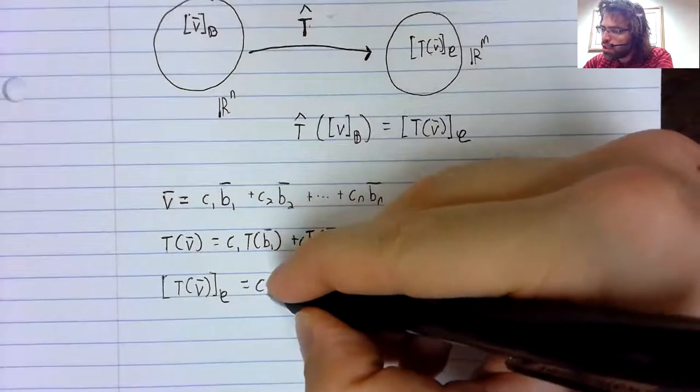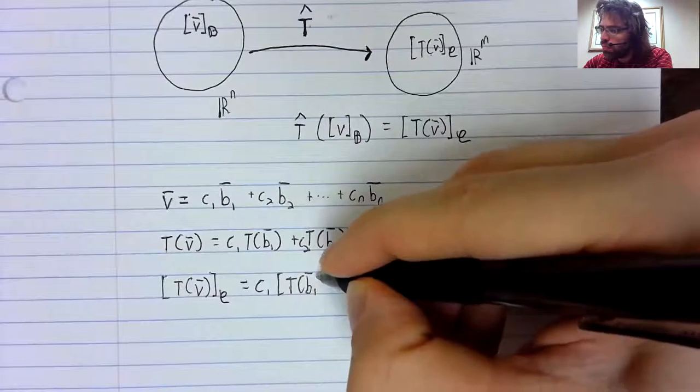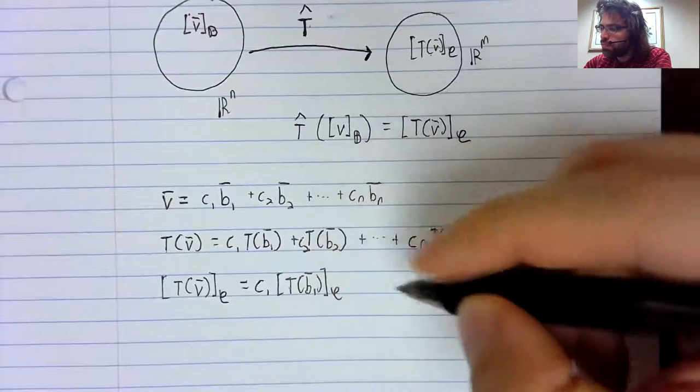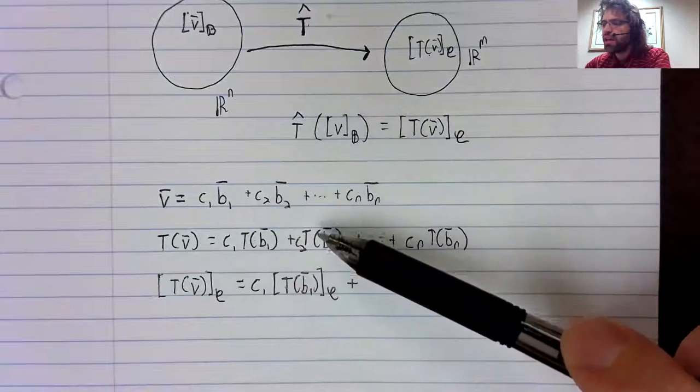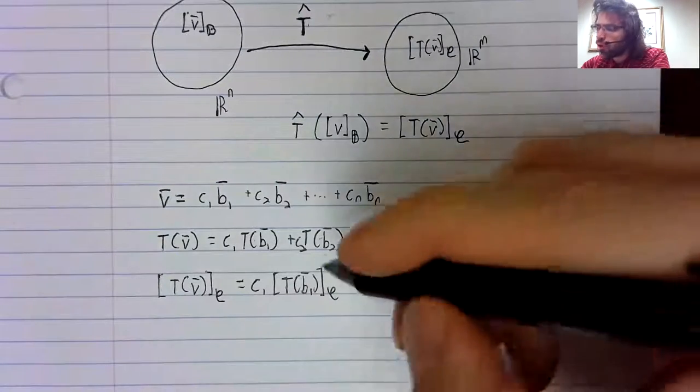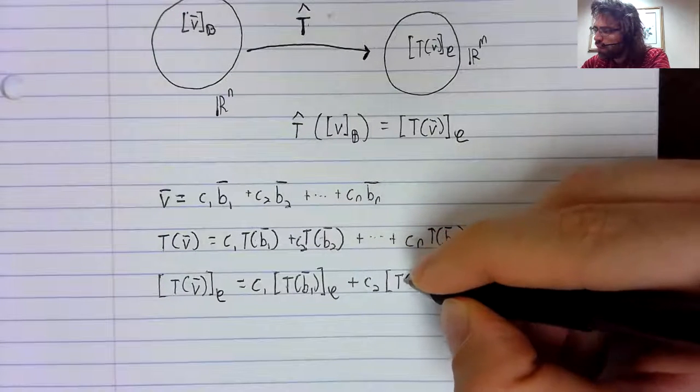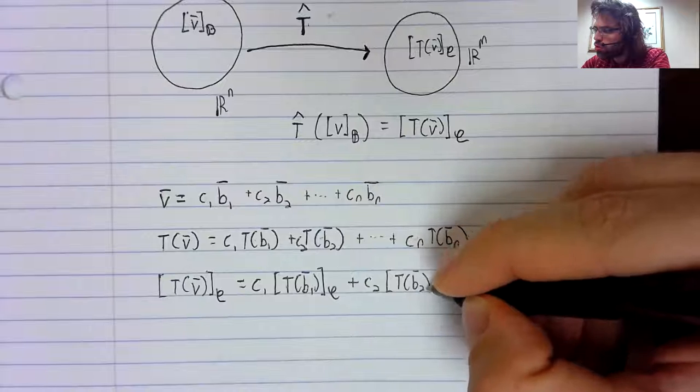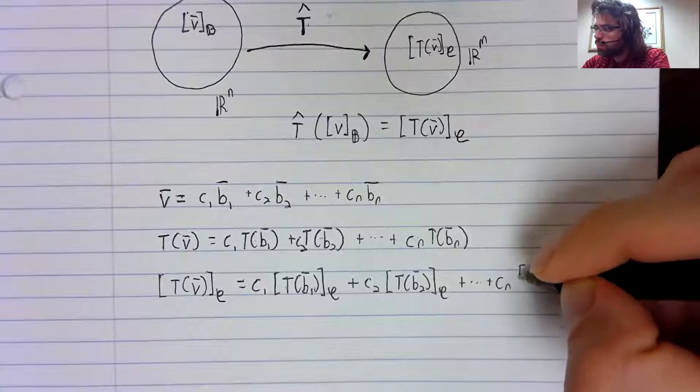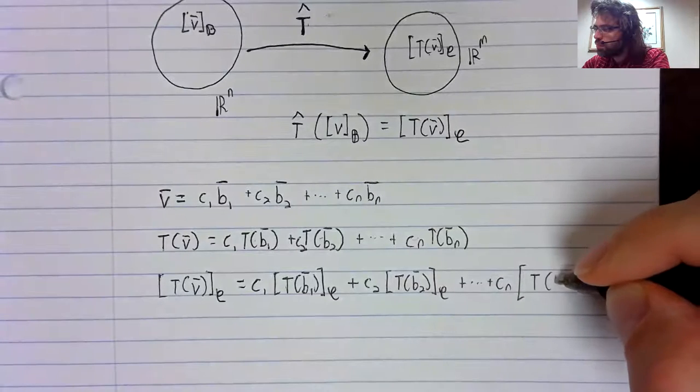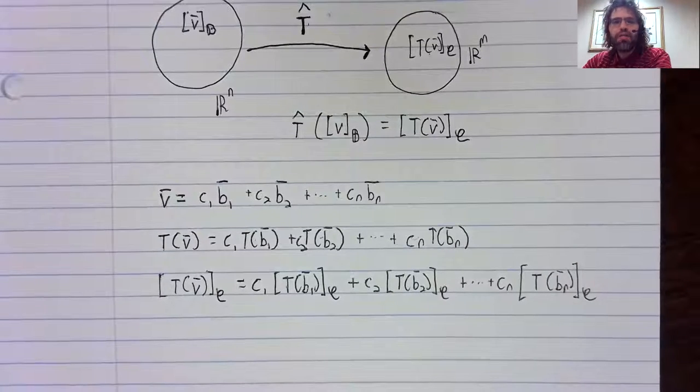The coordinate transformation is also linear. So when we apply it to this sum, it's the same as applying it to each of these in turn. And the constants pull out.